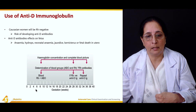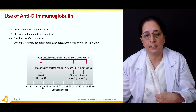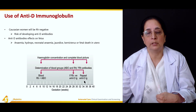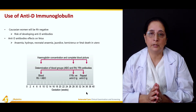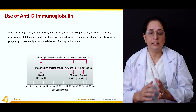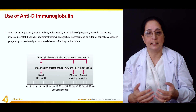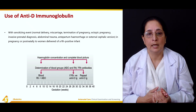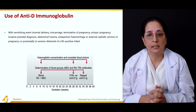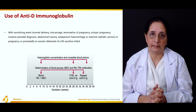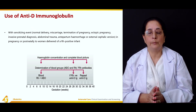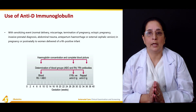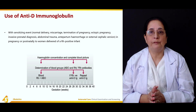Anti-D immunoglobulin is first given at about 28 weeks of gestation and then repeated at 34 to 36 weeks gestation. It is also given after sensitizing events such as normal delivery, miscarriage, or termination of pregnancy, and should be given to women who have delivered an Rh-positive infant. Anti-D immunoglobulin should be given to mothers with ABO or Rh factor incompatibilities to prevent complications.